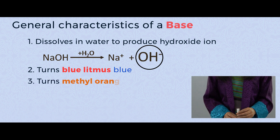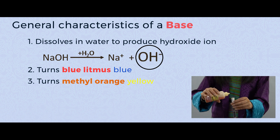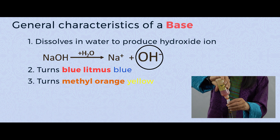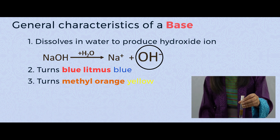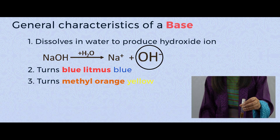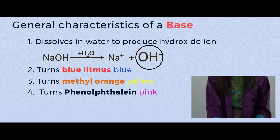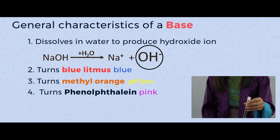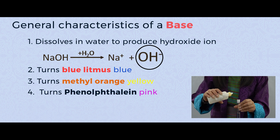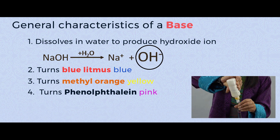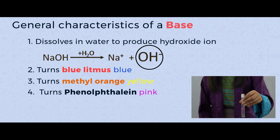Number 3: base turns methyl orange yellow. In this same solution, I'm going to add some methyl orange, and you can see it has turned yellow. Number 4: base turns phenolphthalein pink. Here again I have sodium hydroxide, and I'm adding colorless phenolphthalein — you can see the color has now turned pink.